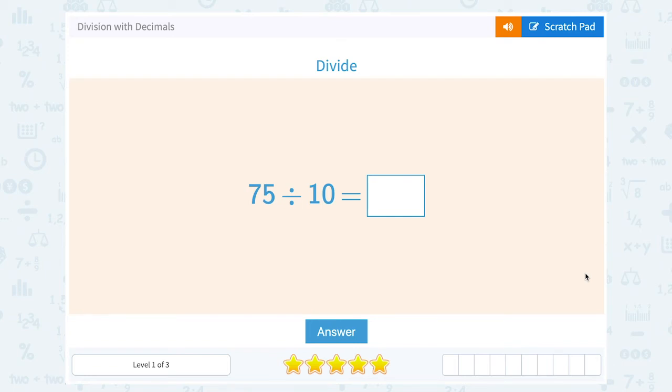Let's take a look at division with decimals. We have 75 divided by 10. Now we do have a special pattern when we're dividing with 10 because our place value system is based on 10.